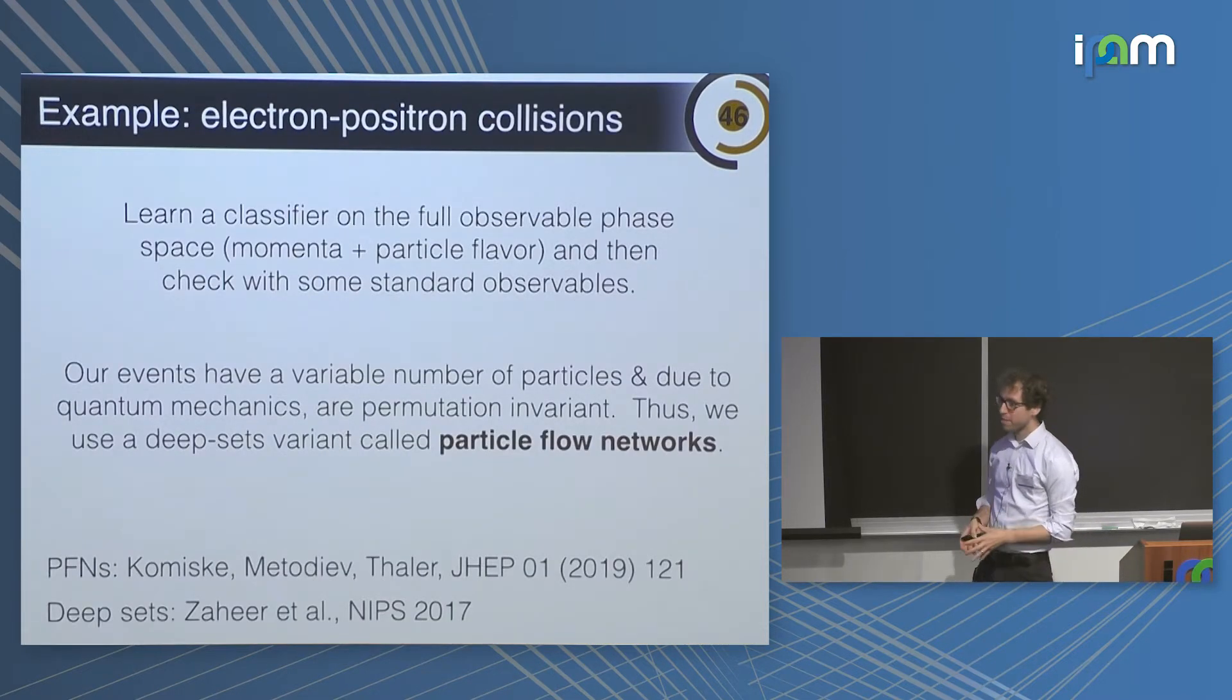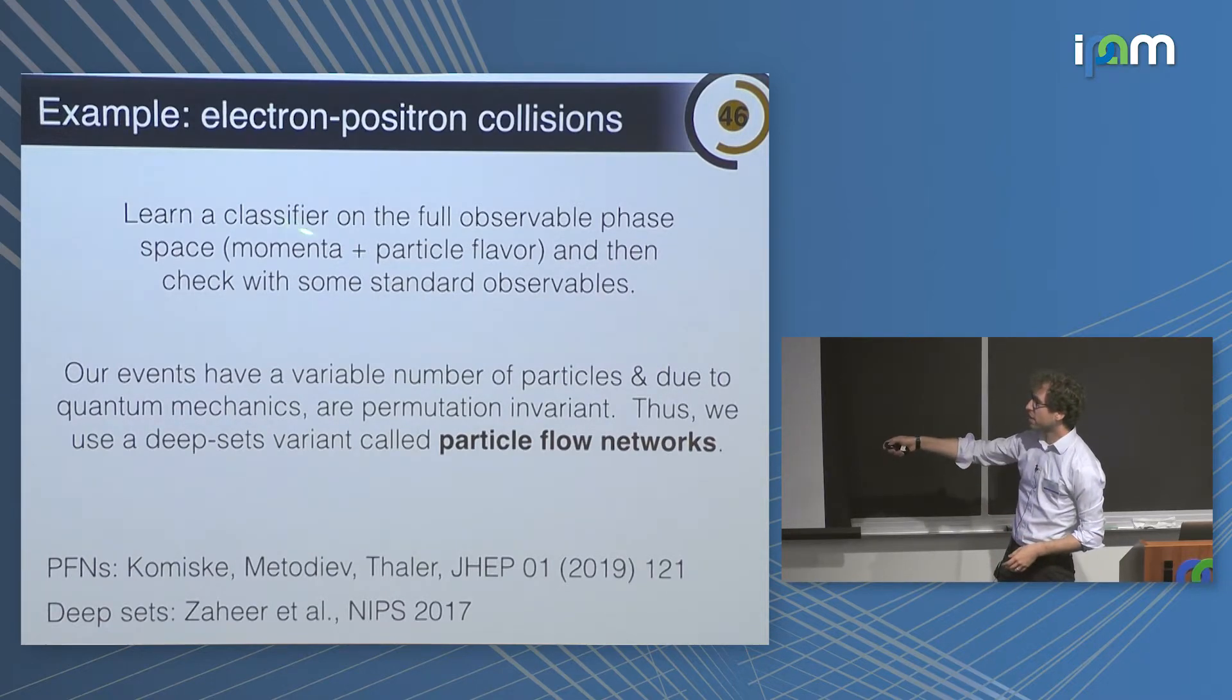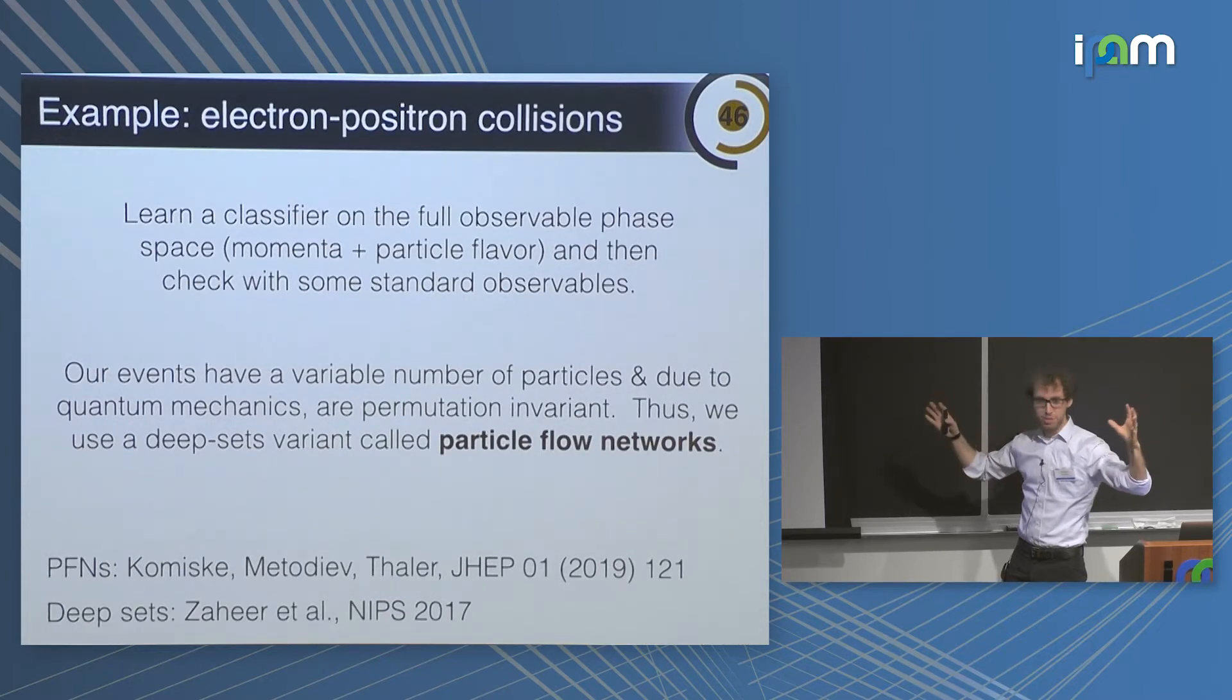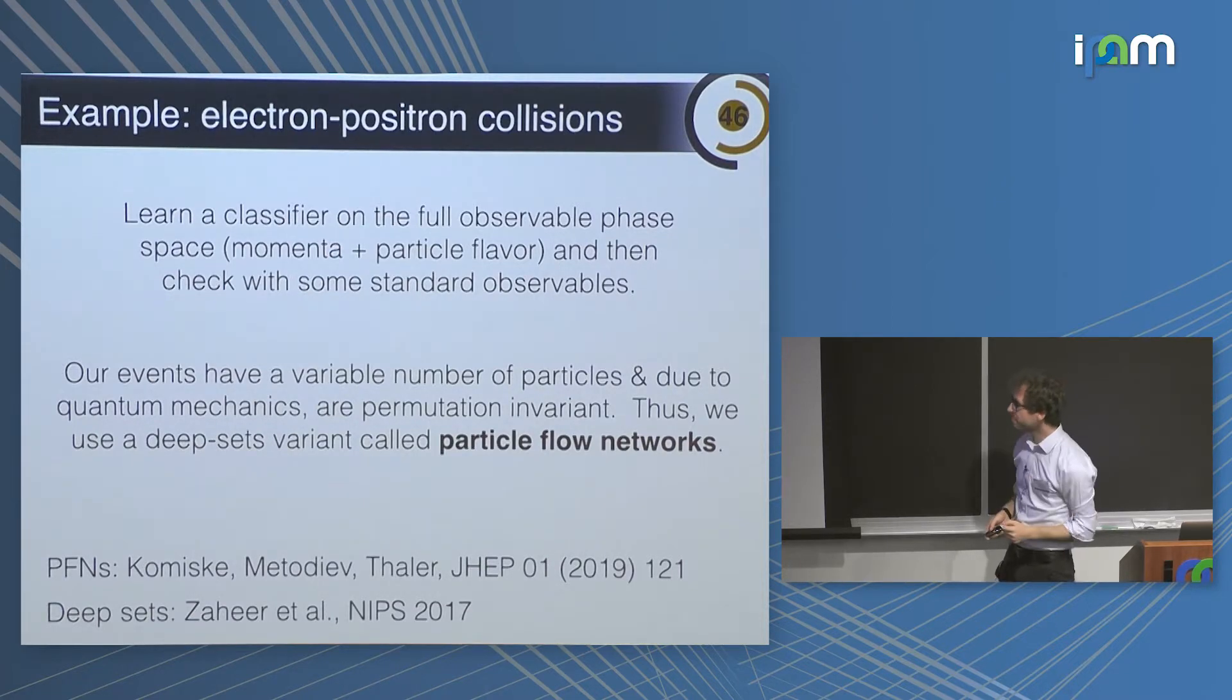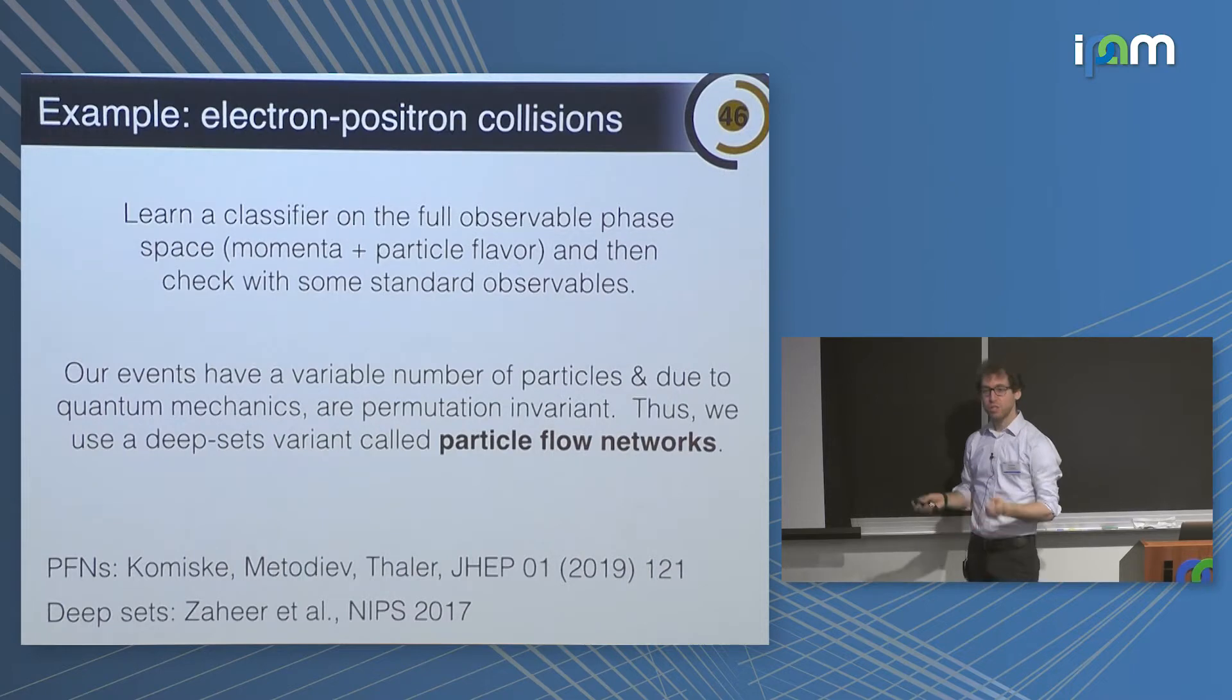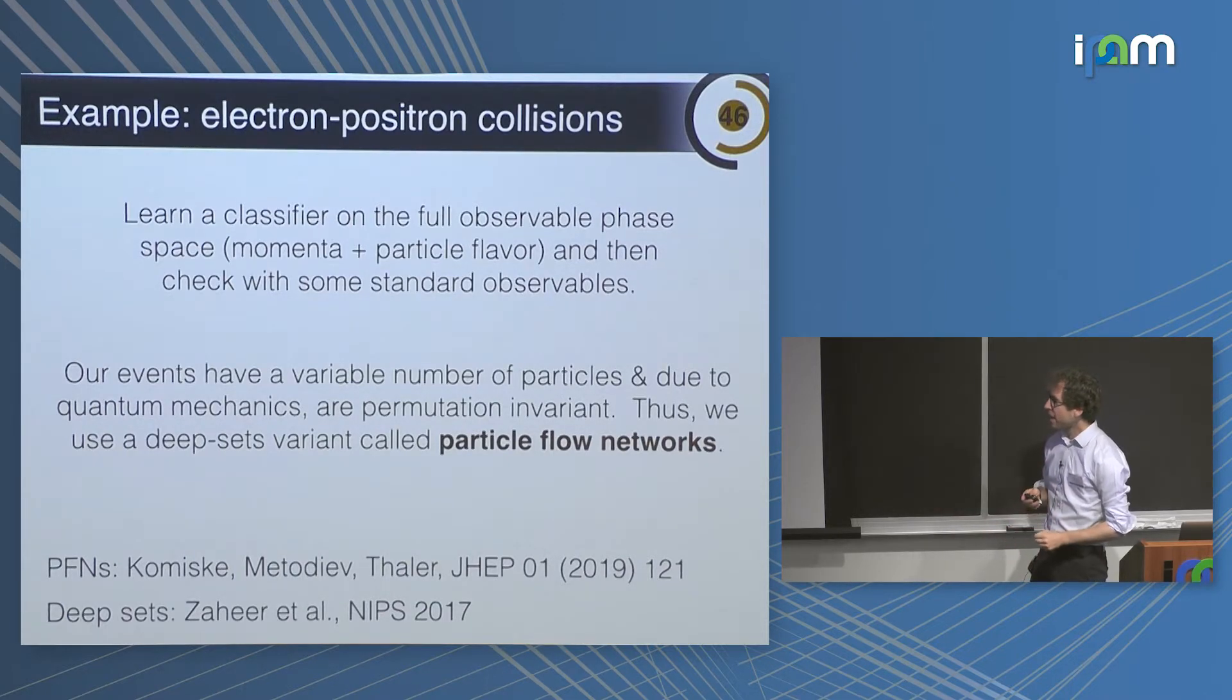So this is great. I can train a classifier and that allows me to learn the likelihood ratio, which is exactly the reweighting I need to do. And why I'm happy about this is because classification is easy, but generation is hard. Let me show you an example of how this would work in practice. I want to learn a classifier on the full phase space. I can't visualize it, but it has hundreds of thousands of particles, each with three bits of information: the momentum as well as the type of particle. Our events have a variable number of particles actually. So you can't just train a simple fully connected network. So instead we use a variant of deep sets called particle flow networks, which is basically deep sets with some particle physics structure baked in.